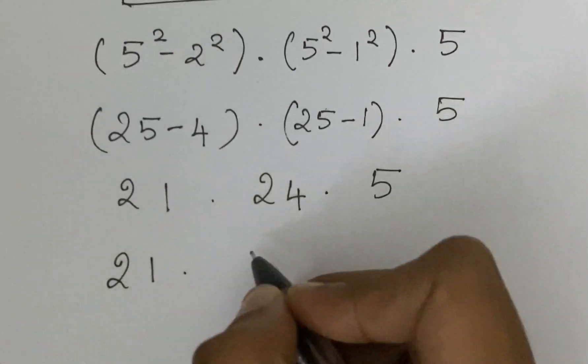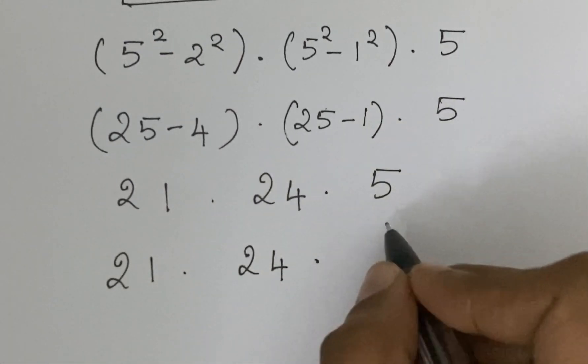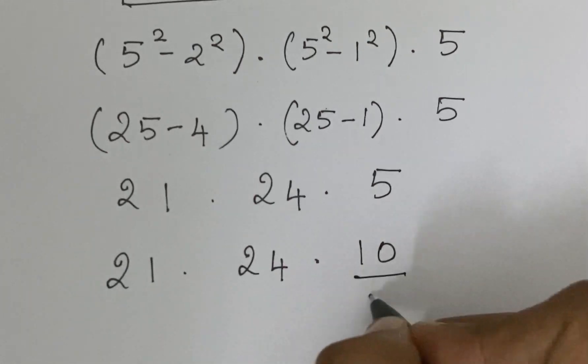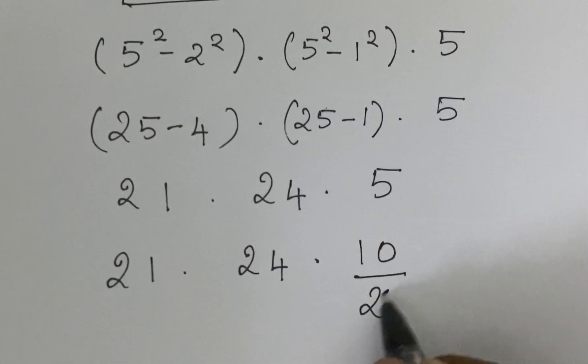21 times 24 times 5 can be written as 10 by 2. We cancel out this.